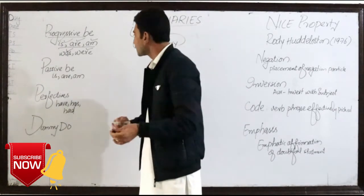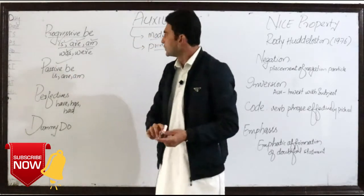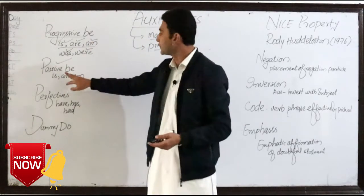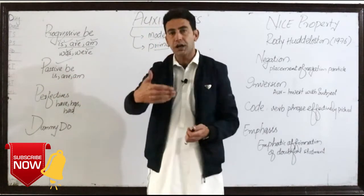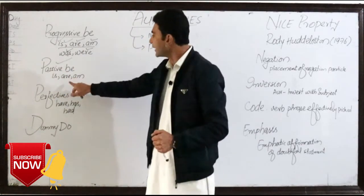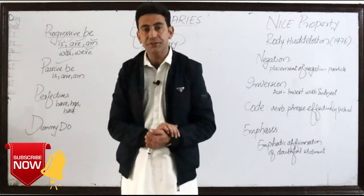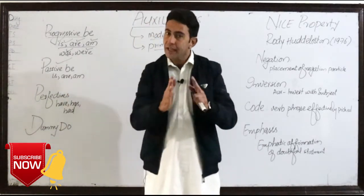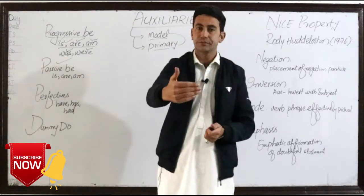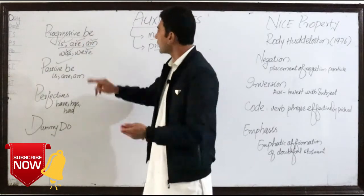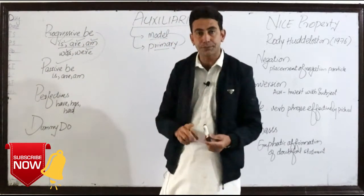Now moving on to passive BE. Just like progressive BE, passive BE is also comprised of is, are, am, was, and were, but here it is used in passive construction. For example: 'the apple was eaten', 'the work was done.' This is the only difference between progressive BE and passive BE.